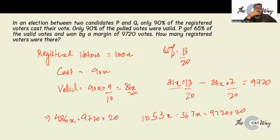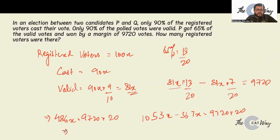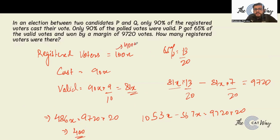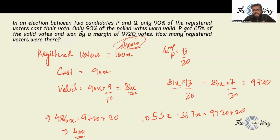Using a calculator: 9,720 multiplied by 20 divided by 486 gives x equal to 400. Registered voters are 100x, so 100 multiplied by 400 gives 40,000. So 40,000 is the correct answer for this question. I hope all seven questions are now clear. If you have any doubts, comment in the comment section and I'll reply.